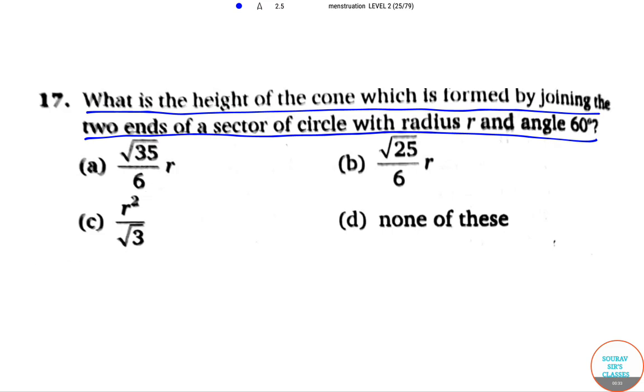The options are: root 35 r by 6, root 25 r by 6, r square by root 3, or none of these.